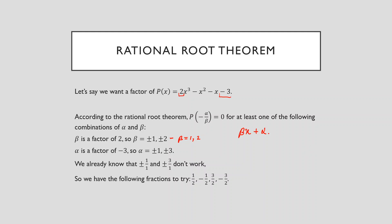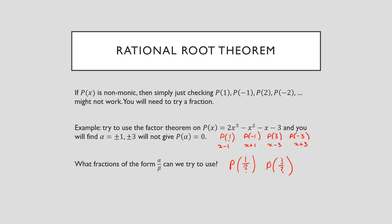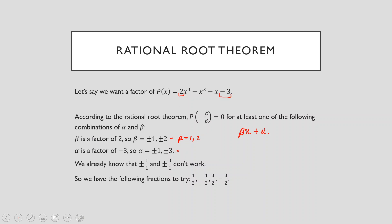Alpha is done the same way as before — the possible factors of negative three: positive or negative one, or positive or negative three. Now, we already know that these combinations don't work: alpha = ±1 with beta = 1, and alpha = ±3 with beta = 1. So that value of beta does not help us. What we have to do now is look at the other value of beta — which in this case is just two — and try those fractions instead. We're using values of the form negative alpha over beta in our remainder theorem, with alpha being ±1 or ±3 as numerators.